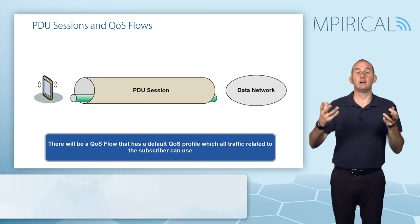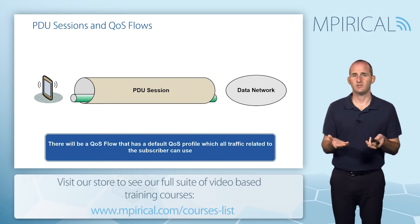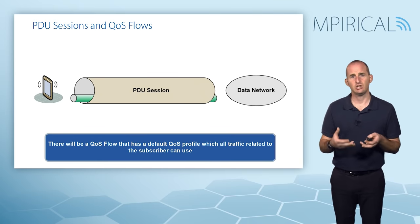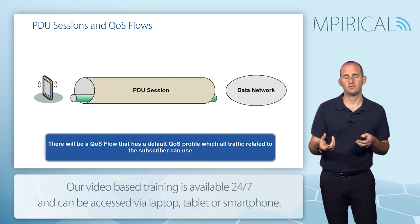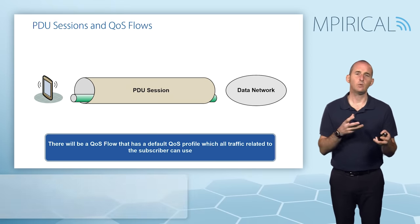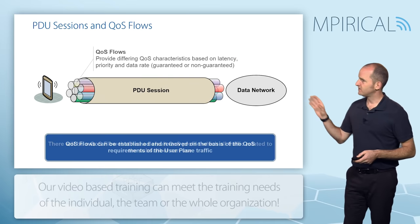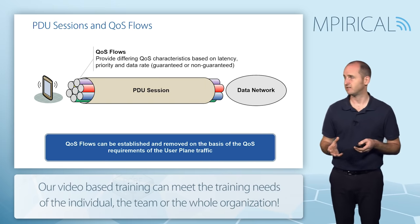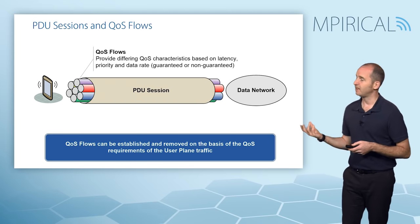To distinguish between QoS flows, each one has a QoS Flow ID. To begin with we will have a default QoS flow, and this default QoS flow will have a particular level of quality of service but no packet filtering on it, so all packets can potentially go down this flow if necessary. However, as soon as we add additional QoS flows with different QoS requirements, we start filtering which traffic goes down which bearer. Within a PDU session we could have several QoS flows in existence.